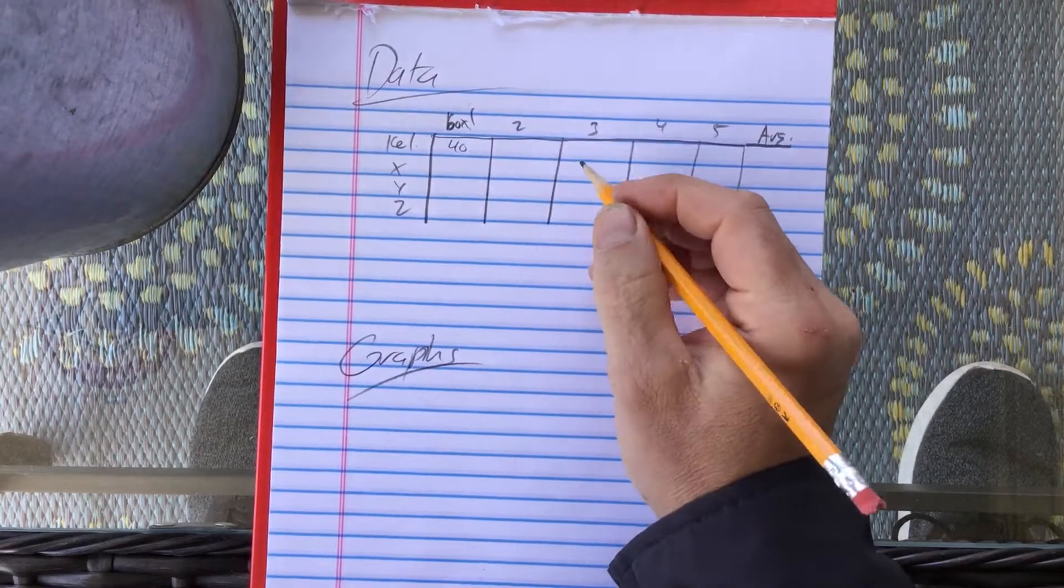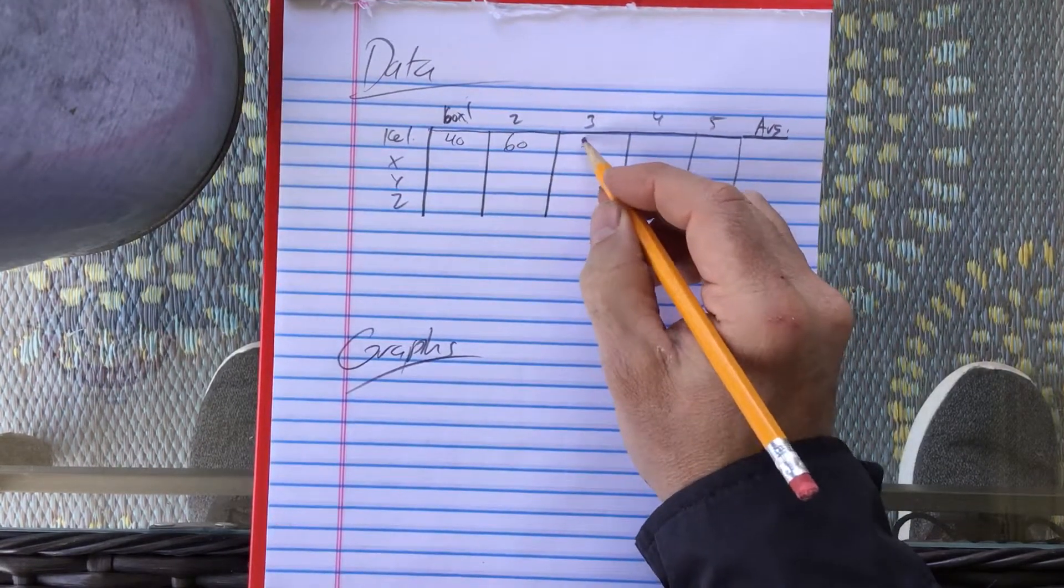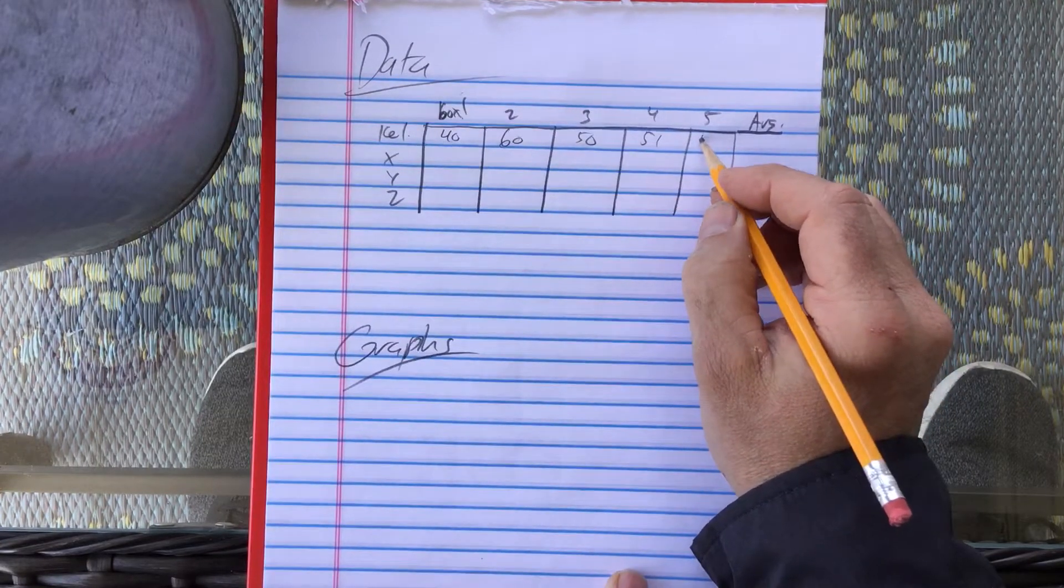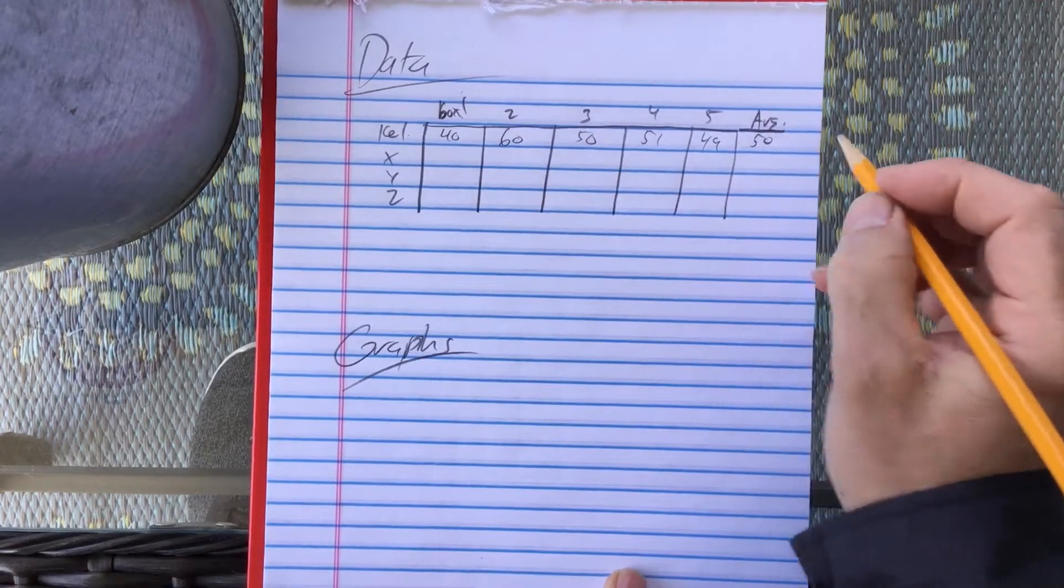In the Kellogg's box, I counted 40 raisins, and then 60, and then 50, and then 51, and then 49, and for an average of 50, we'll say.